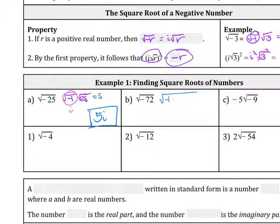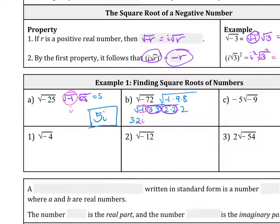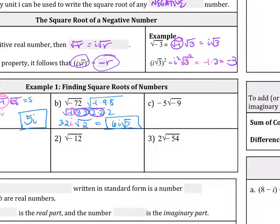Part B: square root of negative 72. We factor it as negative 1 times 9 times 8, then break it down further: negative 1 times 3 times 3 times 2 times 2 times 2. We circle our pairs — they come outside and get multiplied, giving 3 times 2, the negative 1 becomes an I outside, and we have square root of 2 remaining. So that simplifies to 6I root 2.